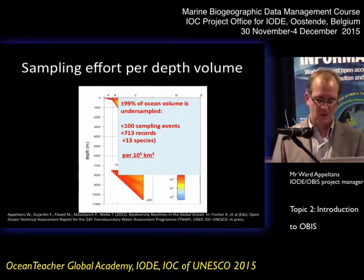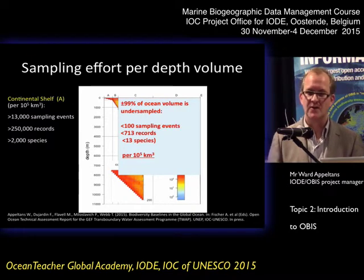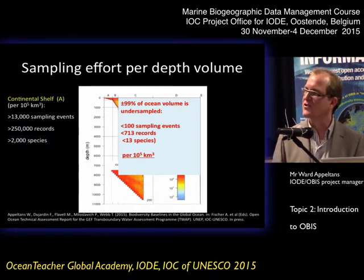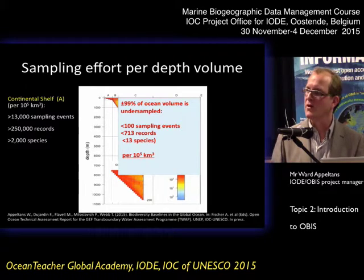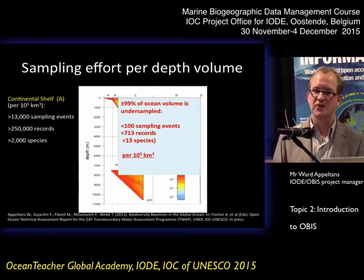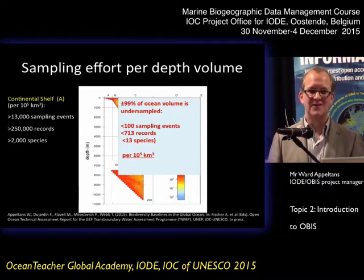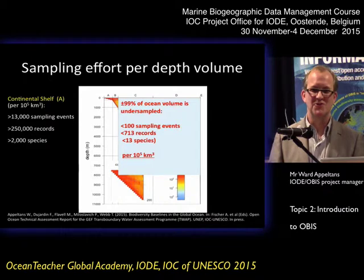If you compare that with what we have from the continental shelf, there for the same volume you have more than 13,000 sampling events, more than 250,000 records, and more than 2,000 species. So really, for 99% of the ocean, we know very, very little.